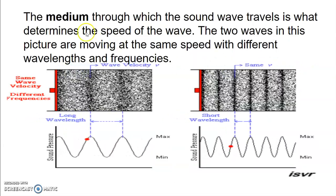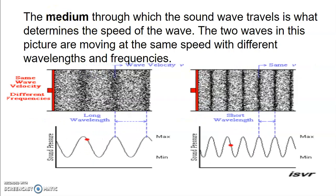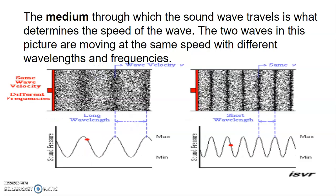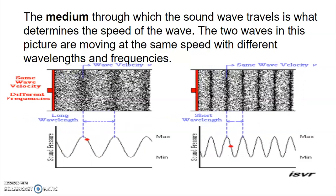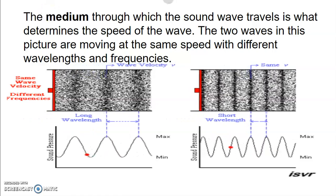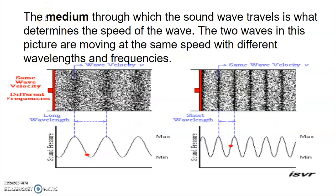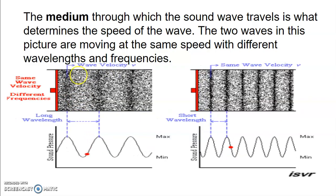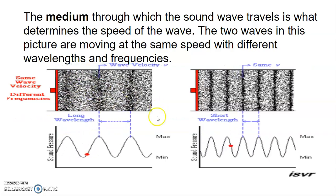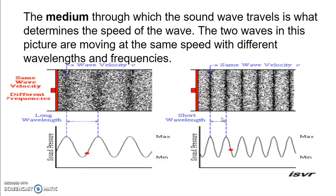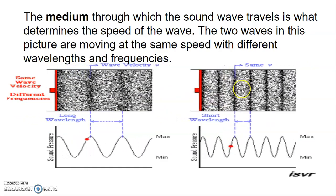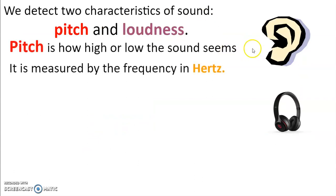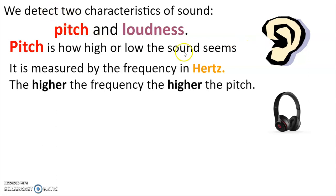The medium determines how fast sound travels. Through air, sound travels about 340 m/s; through water, a little over 1,000 m/s; through solids it travels even faster. In air, the only things that really change between different sounds are the frequency and the loudness. Lower frequency means a longer wavelength; higher frequency means a shorter wavelength, but the speed of sound stays constant in a given medium.